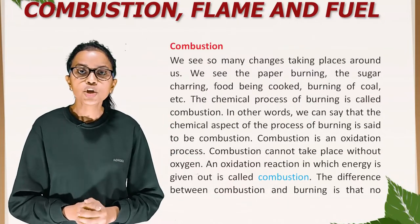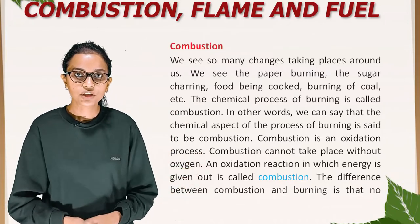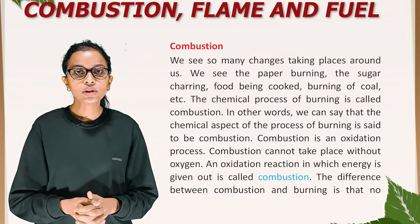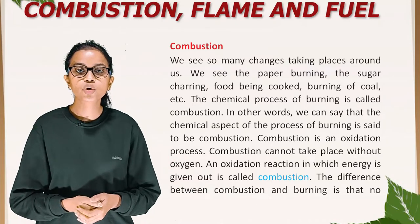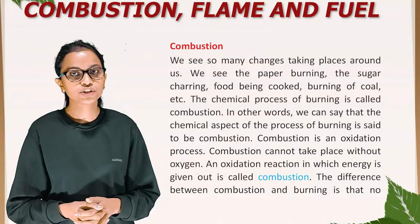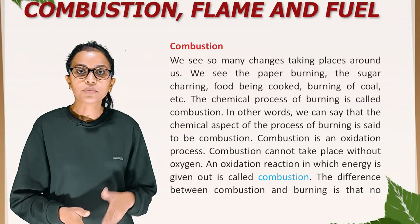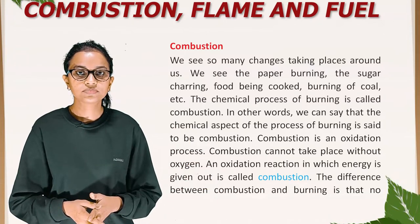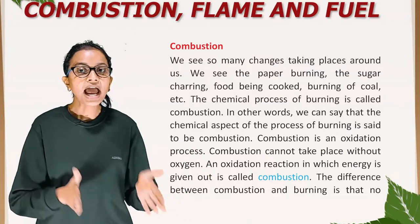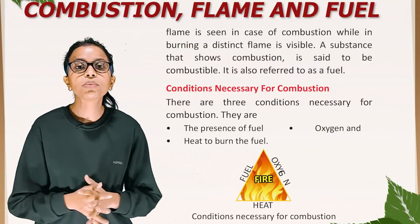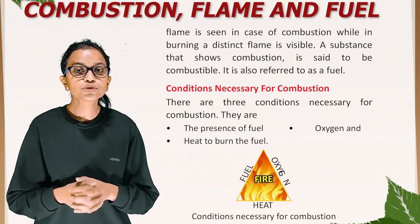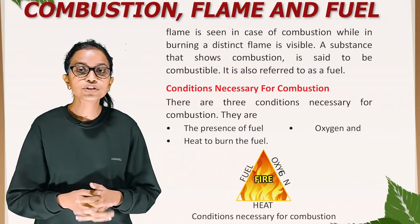Combustion. We see so many changes taking place around us — we see paper burning, sugar charring, food being cooked, burning of coal, etc. The chemical process of burning is called combustion. In other words, the chemical aspect of the process of burning is said to be combustion. Combustion is an oxidation process. Combustion cannot take place without oxygen. An oxidation reaction in which energy is given out is called combustion. The difference between combustion and burning is that no flame is seen in case of combustion, while in burning a distinct flame is visible. A substance that shows combustion is said to be combustible; it is also referred to as a fuel.